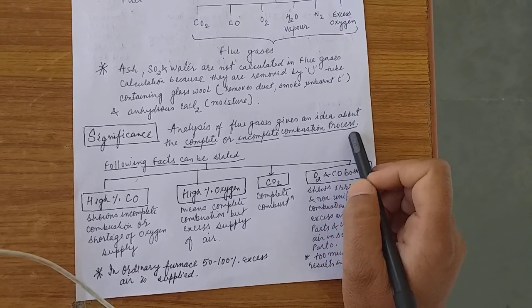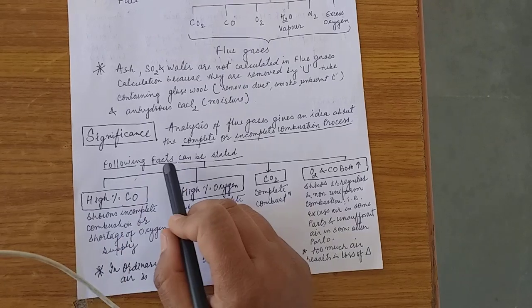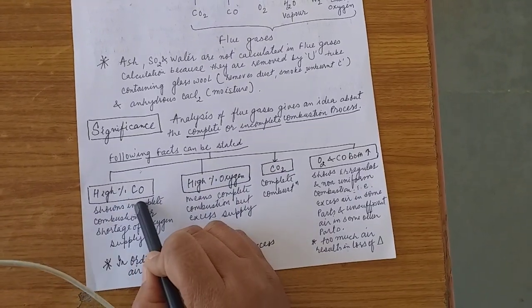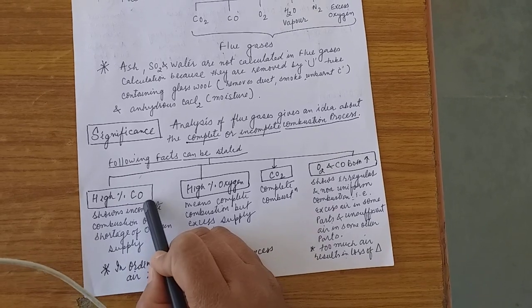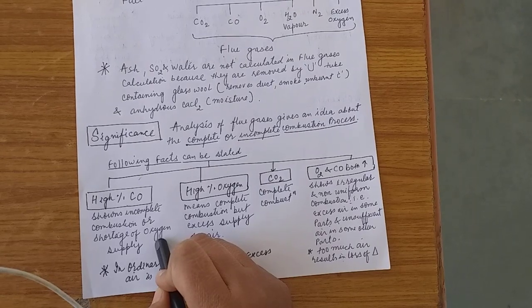This process shows complete or incomplete combustion of fuel which we are using, it may be solid, liquid, or gaseous. Following effects can be stated after combustion: if there is a high percentage of carbon monoxide, it shows incomplete combustion and also shortage of the oxygen supply.